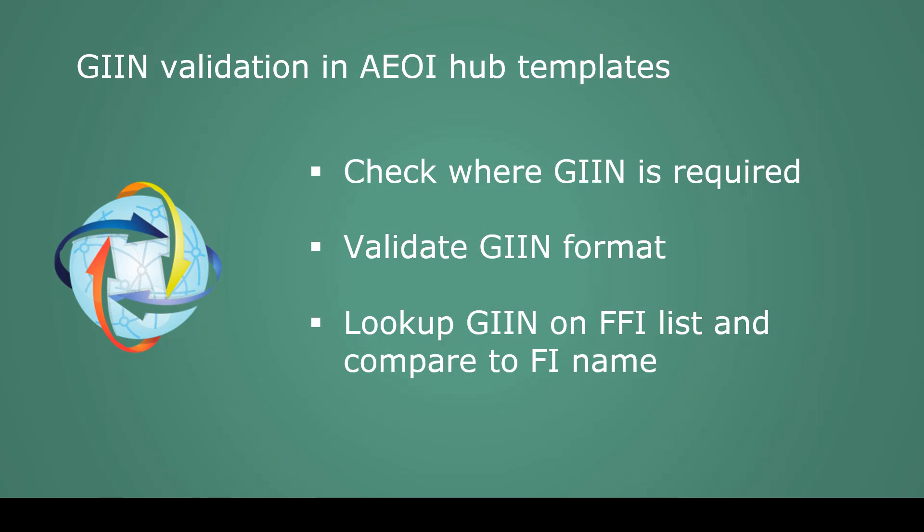In terms of the validations that we perform in the template: firstly, we check where a GIIN is required and prompt you of that fact by checking the local rules of the jurisdiction that you're filing in. Secondly, we check the format of the GIIN that you enter to ensure that it's valid. And thirdly, we then offer an option to look up the GIIN on the FFI list to check that it's there and compare it to the FI name, because in many jurisdictions, if you get the name wrong in your submission compared to what they're expecting from the FFI list, it can cause it to be rejected.